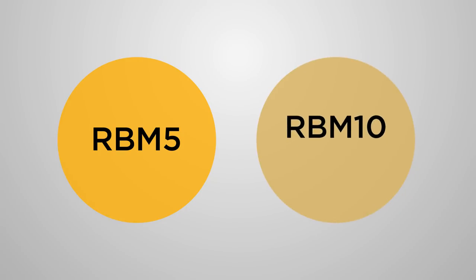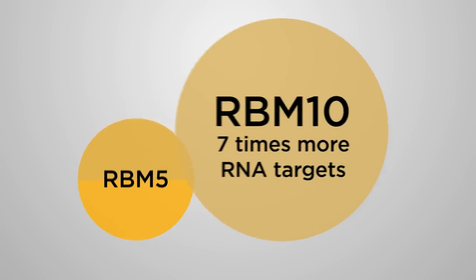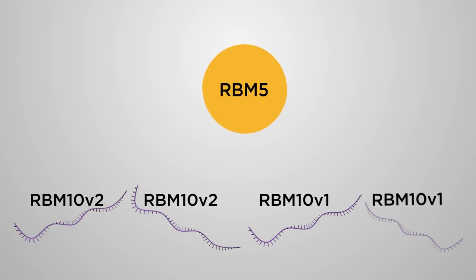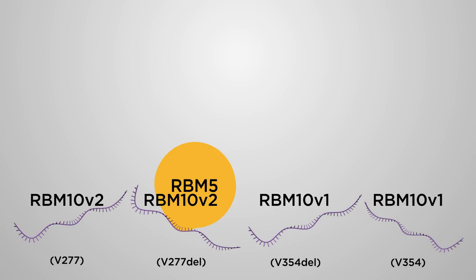They found that RBM10 has almost 7 times more RNA targets than RBM5. About half of RBM5's targets were shared by RBM10, suggesting only partial overlap in the roles of these proteins. They also showed that RBM5 can even bind only one specific version of RBM10 RNA.